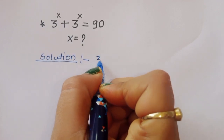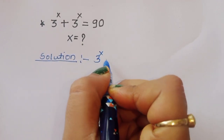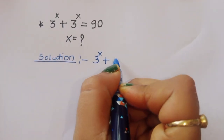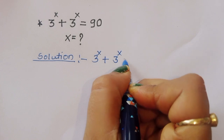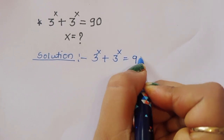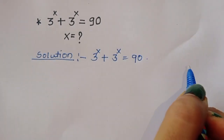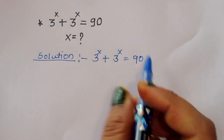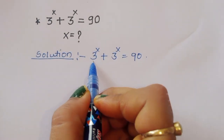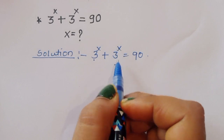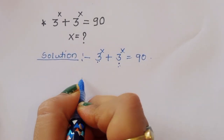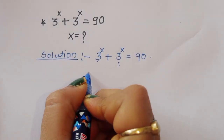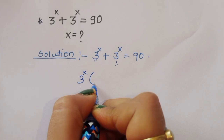First, what is given: 3 power x plus 3 power x is equal to 90. You can see here we have 3 power x and 3 power x, so we can take 3 power x as a common factor.